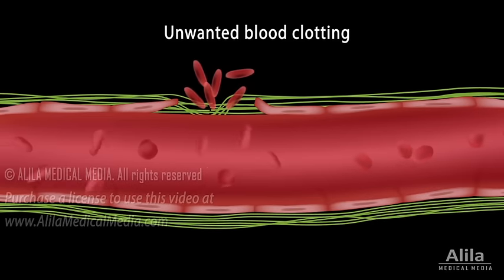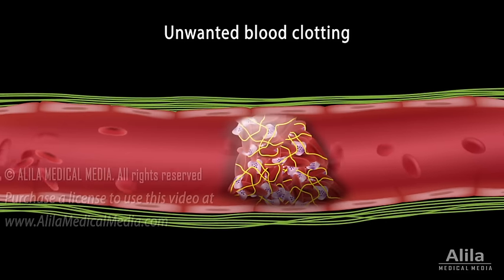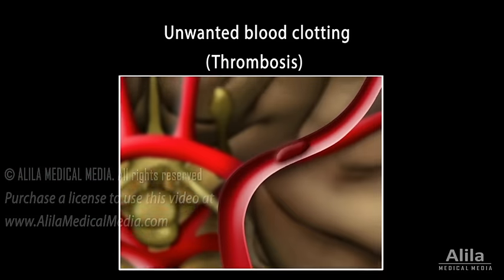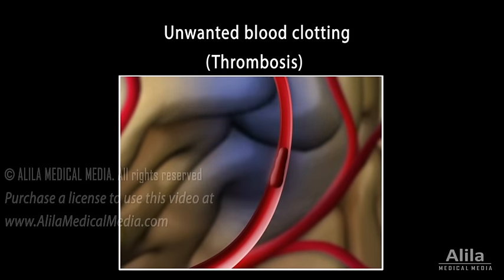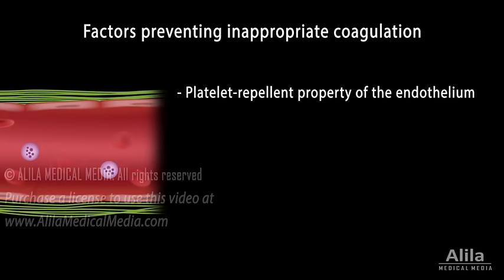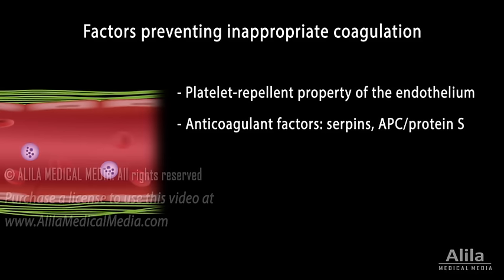While formation of blood clots is critical to control bleeding, inappropriate coagulation can be dangerous. In fact, far more people die from unwanted blood clotting than from clotting failure. Unwanted blood clot formation, known as thrombosis, is the most common cause of blocked arteries in heart attacks, strokes, and pulmonary embolism. Factors that prevent inappropriate coagulation include the platelet repellent property of the endothelium, anticoagulant factors, enzymes that prevent clot formation, and the fibrinolysis cascade that dissolves blood clots after they are formed.